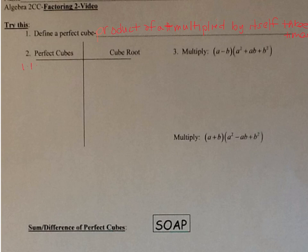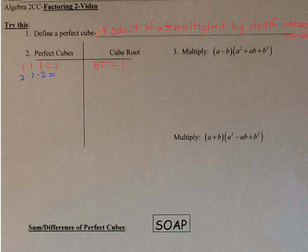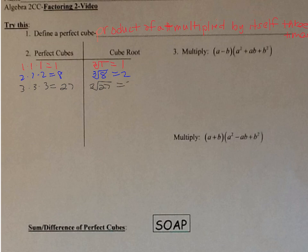1×1×1=1, so 1 is a perfect cube. The cube root symbol uses a little 3 inside the radical — that's called the index. The cube root of 1 is 1. 2×2×2=8, so 8 is a perfect cube; the cube root of 8 is 2. 3×3×3=27, so 27 is a perfect cube; the cube root of 27 is 3.